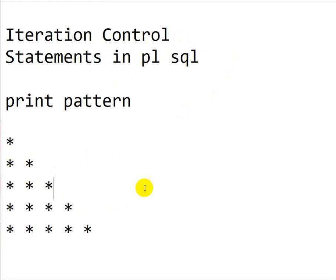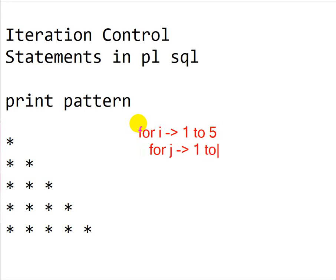To print this pattern we need two loops. The first outer loop is: FOR I IN 1 TO 5. The inner loop is: FOR J IN 1 TO I. We print the pattern inside the inner loop. What happens is: I goes from 1 to 5, and J goes from 1 to I, printing the stars each iteration.